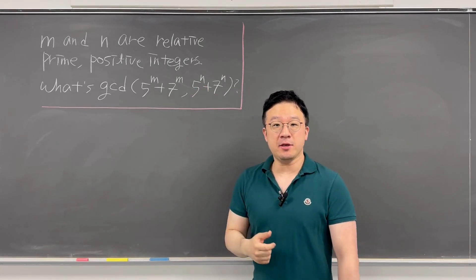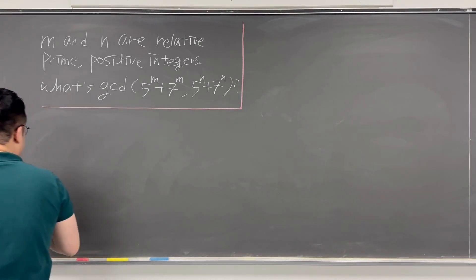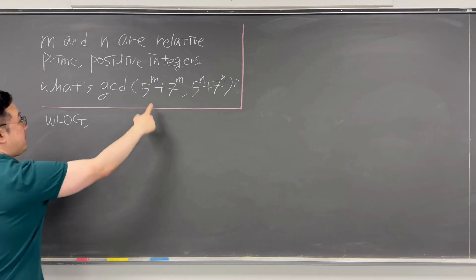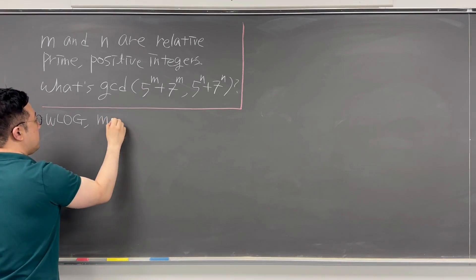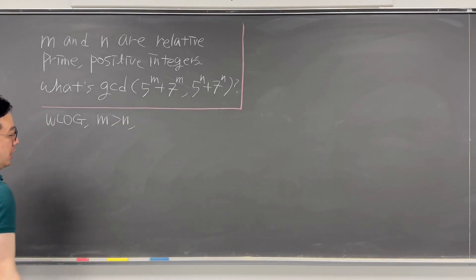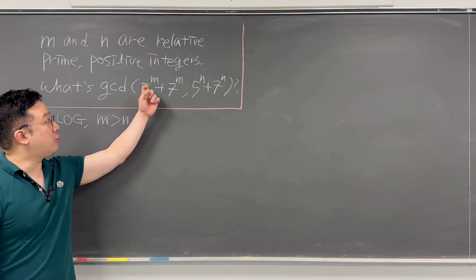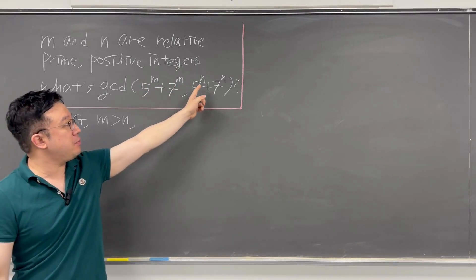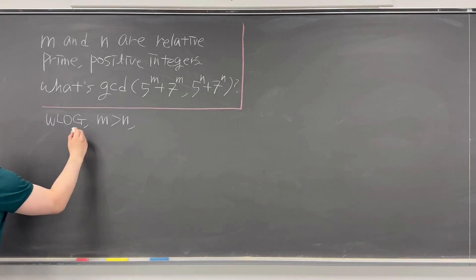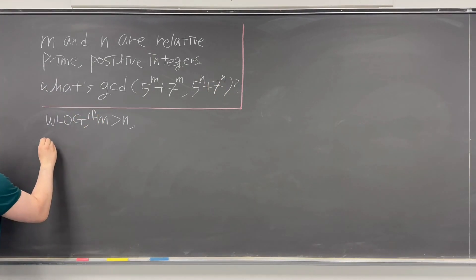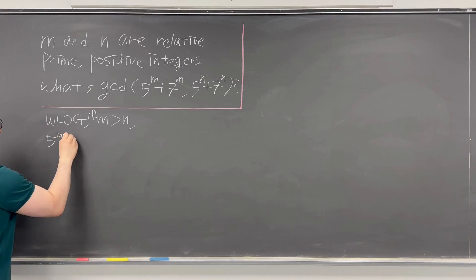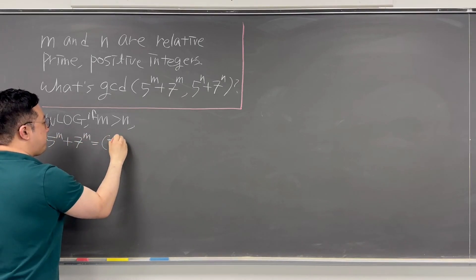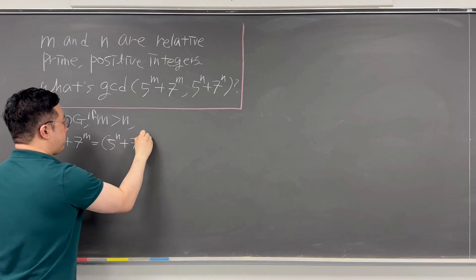For this question, I'll be using the Euclidean algorithm. Without loss of generality, if M is greater than N, we can try factoring 5^M + 7^M using 5^N + 7^N as a factor. In that case, we can represent 5^M + 7^M as equal to (5^N + 7^N) times a factor.